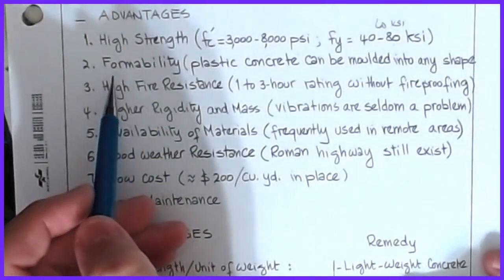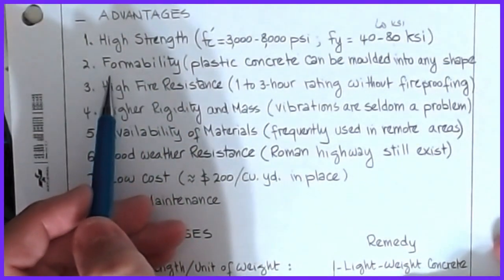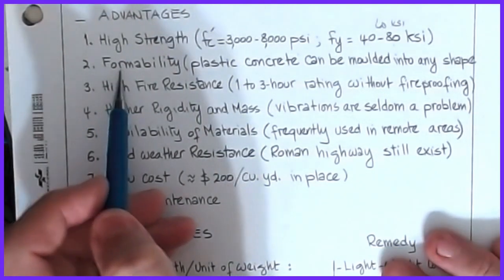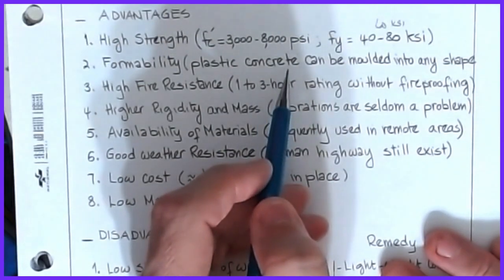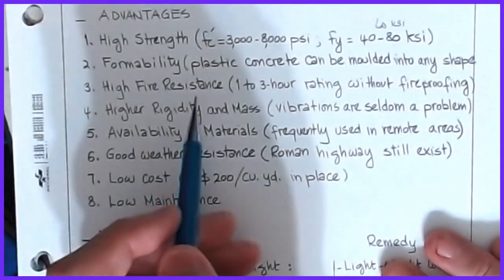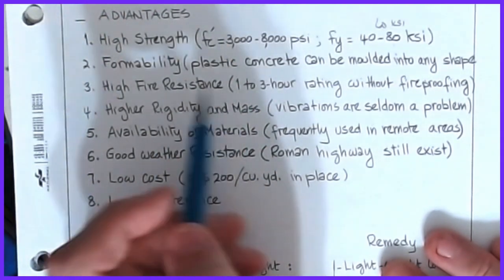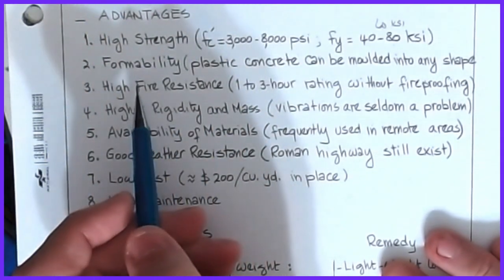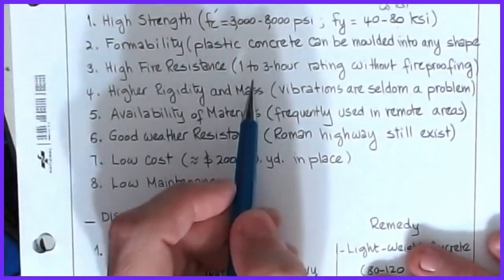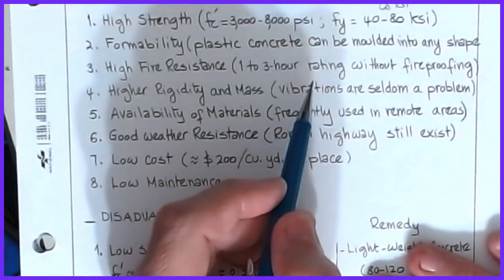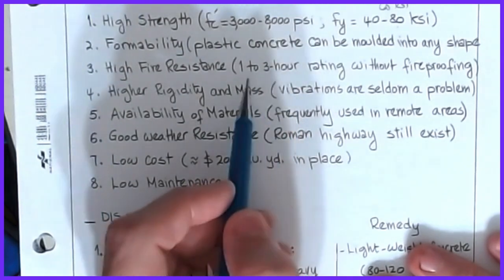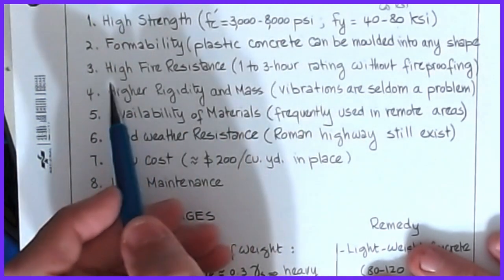Another advantage of reinforced concrete is formability. You can make any shape out of concrete because it's molded when in a semi-liquid state — it flows. So we can do round shapes very easily, more simply than steel counterparts. Concrete is also very high in fire resistance — we can get a one to three hour rating without any sort of fireproofing, whereas steel requires some sort of spray-on coating to achieve those numbers.